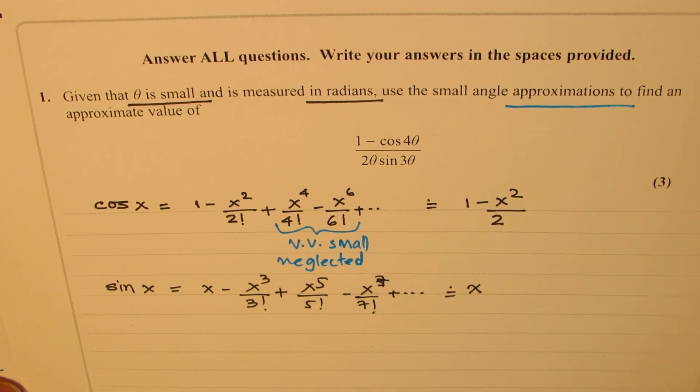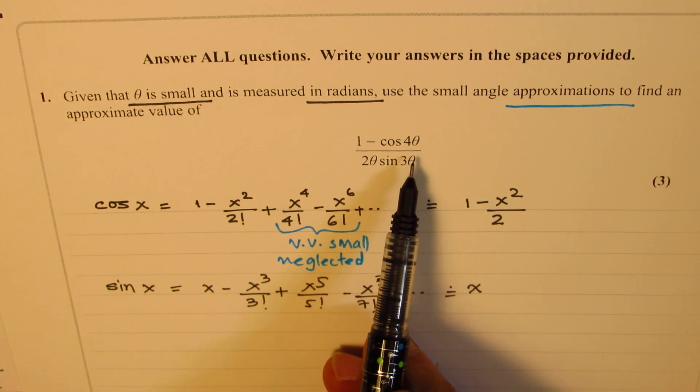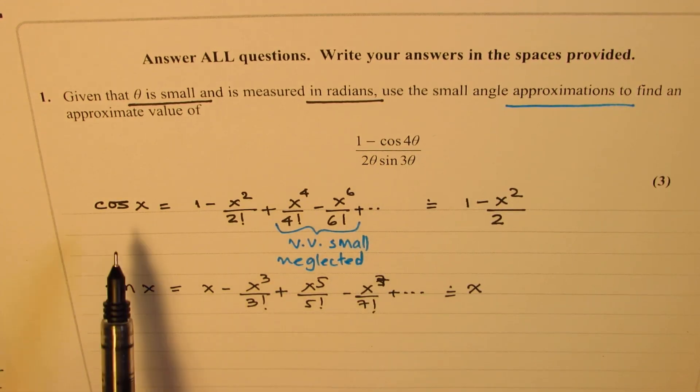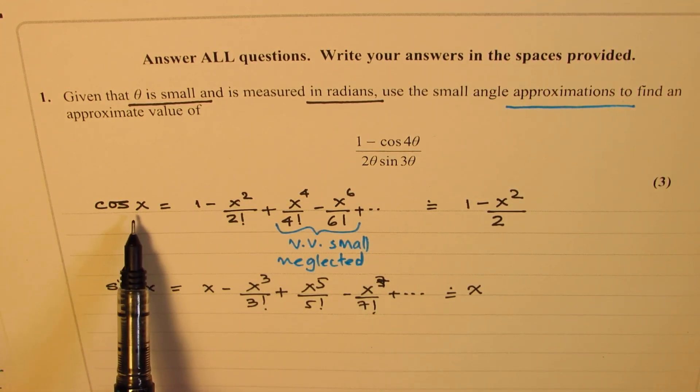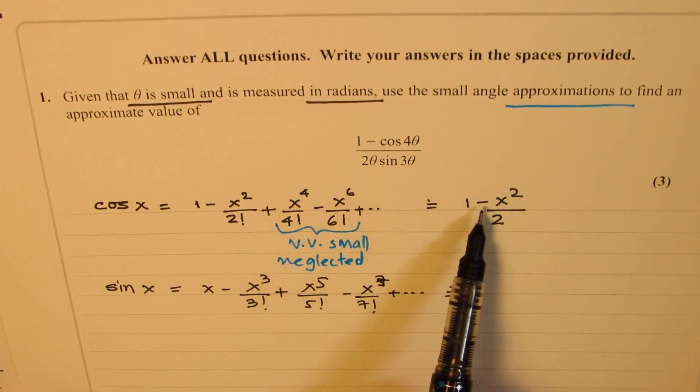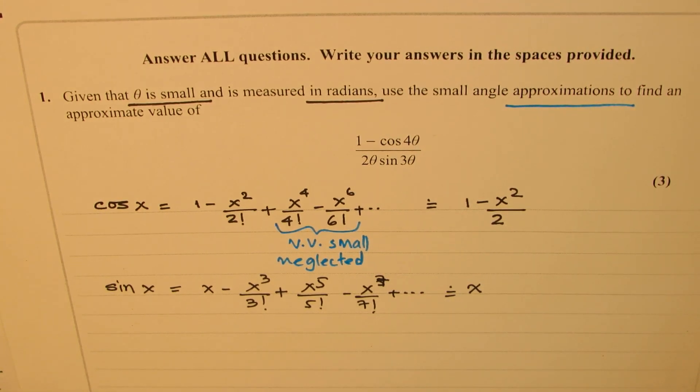Now, when you know this, you can actually solve the equation. 1 minus cos 4 theta. So that is to say that the term cos 4 theta, cos 4 theta, x being 4 theta. So in this formula, we can write this as 1 minus 4 theta whole squared divided by 2. Is that clear? So that is what it means.